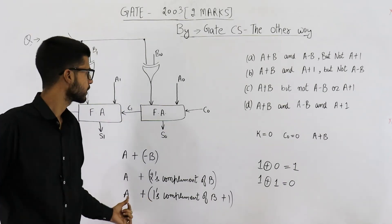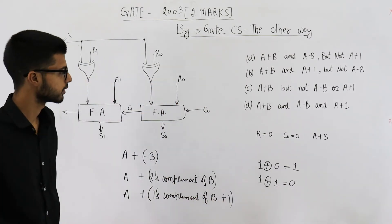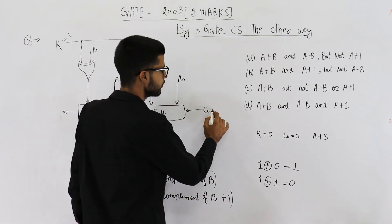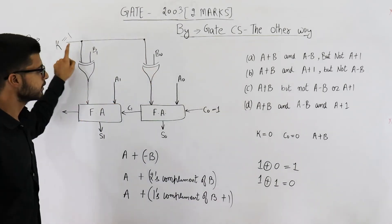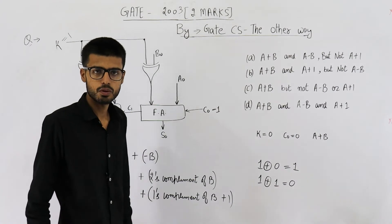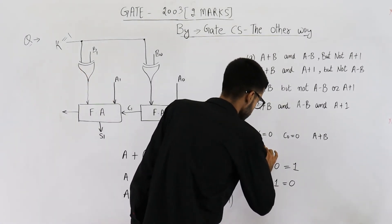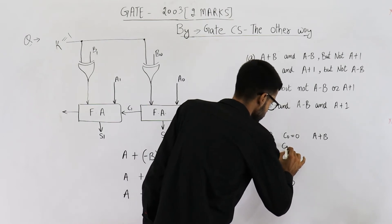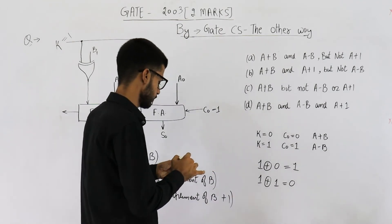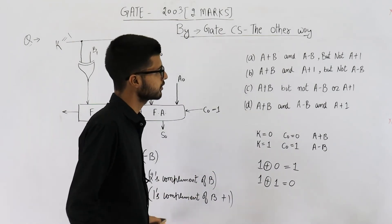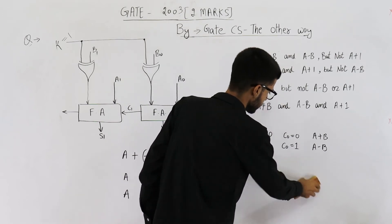A is always present, connected directly. We just need to add 1 to complete the 2's complement, which is done by making c-naught equal to 1. So with k equal to 1 and c-naught equal to 1, we will perform a minus b.